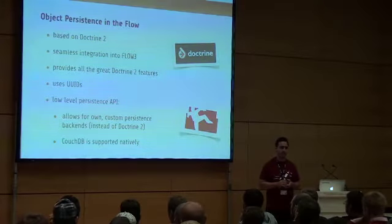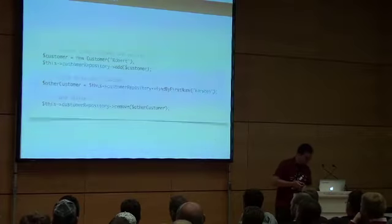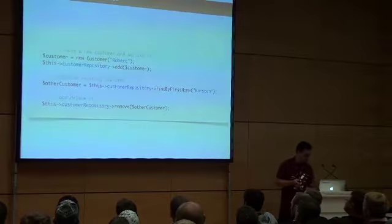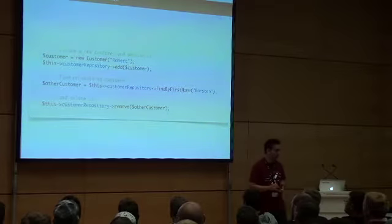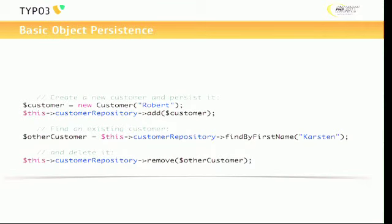But integrating Doctrine into Flow3 in a way that it really feels like Flow3 - so that you don't have to write duplicate configuration all the time - took almost until now, and we're still polishing some parts. Basic persistence, like we had previously in Flow3, is still possible. You just create objects, add them to a repository, and then they're persisted in the database. When you're working with Flow3 and Doctrine, you completely forget about the database and work with objects. Don't think about tables and join tables as a first step - try to think in an object-oriented way and then optimize afterwards.